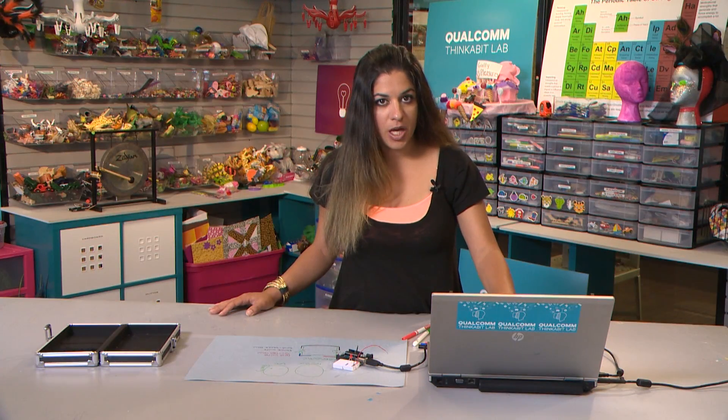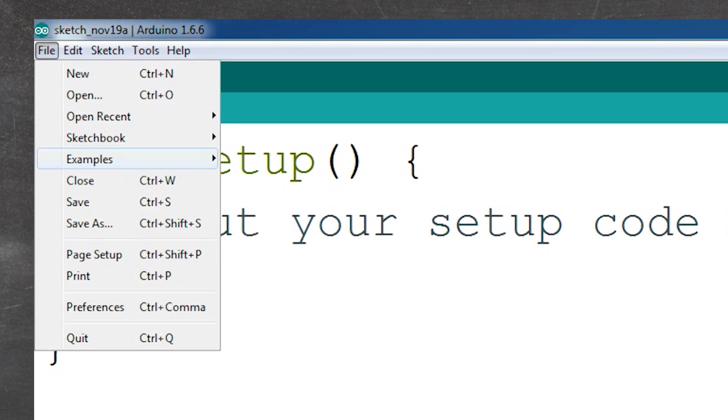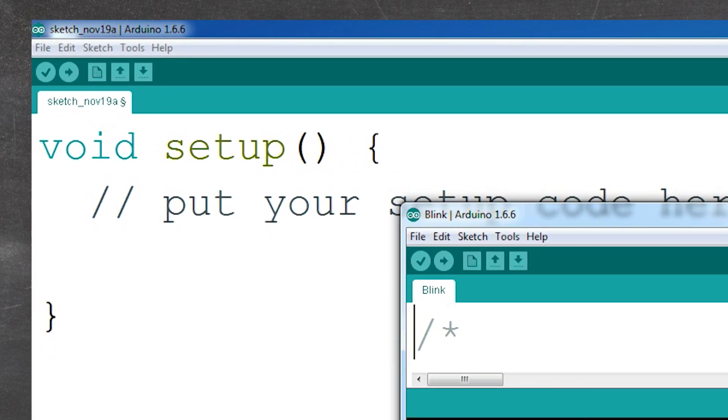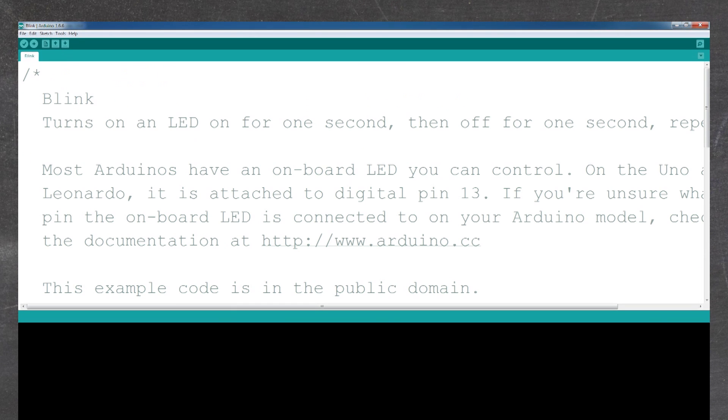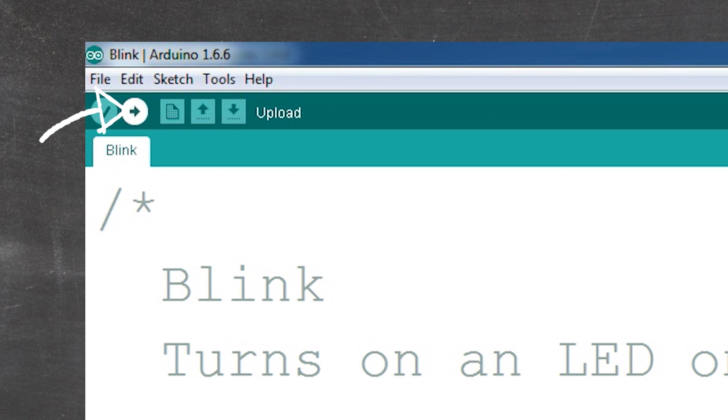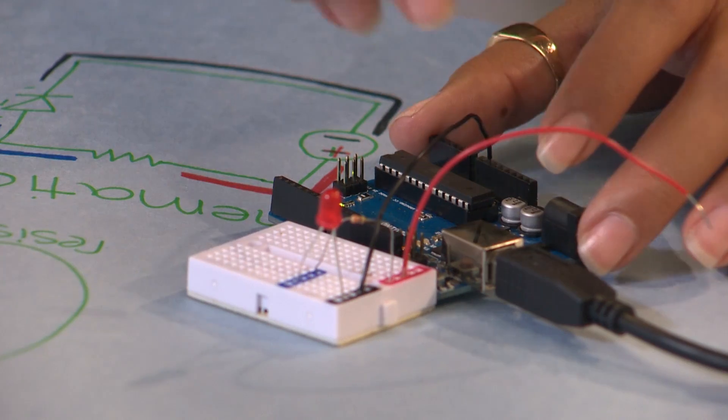And then the next thing I'd like for you to do is go ahead and open up the Blink example. And the way that you do that is you go to File, Examples, Basics, and then click on Blink. When you've done that, go ahead and expand it so that you're not distracted by anything else. And then what I'd like for you to do is go ahead and upload this code. To upload it, you're going to click on the arrow pointing to the right. So go ahead and click on that. And when you hover over the buttons, it tells you what it does, okay? So if you hover over the arrow pointing to the right, it actually says Upload. And then in the blue bar, you'll see that it's uploading code, and then it's done uploading. Once it says done uploading, go ahead and take your red wire and plug it into pin 13.